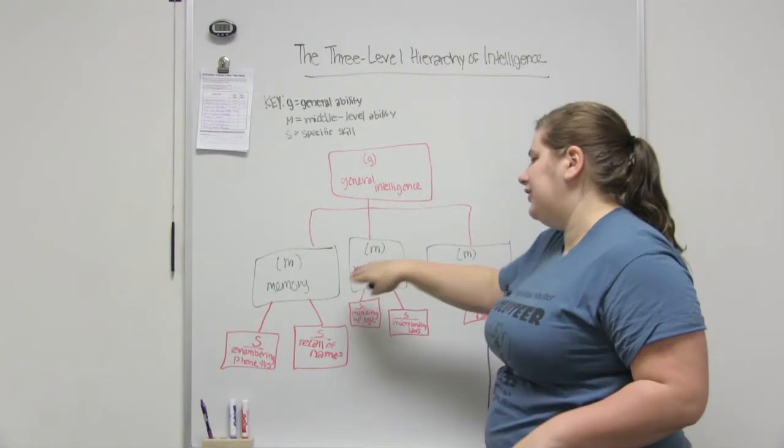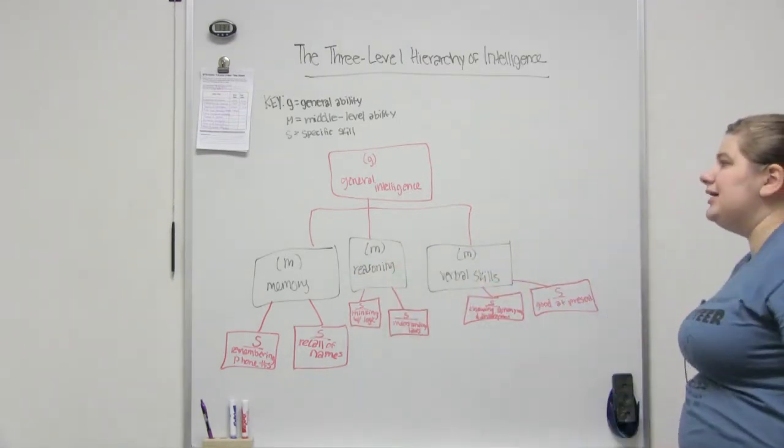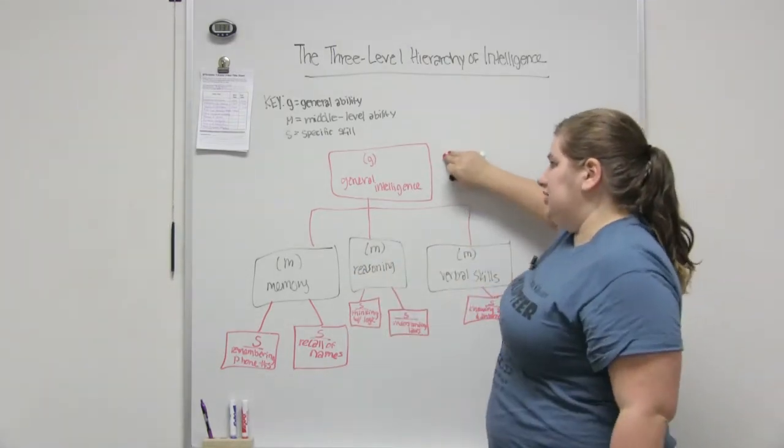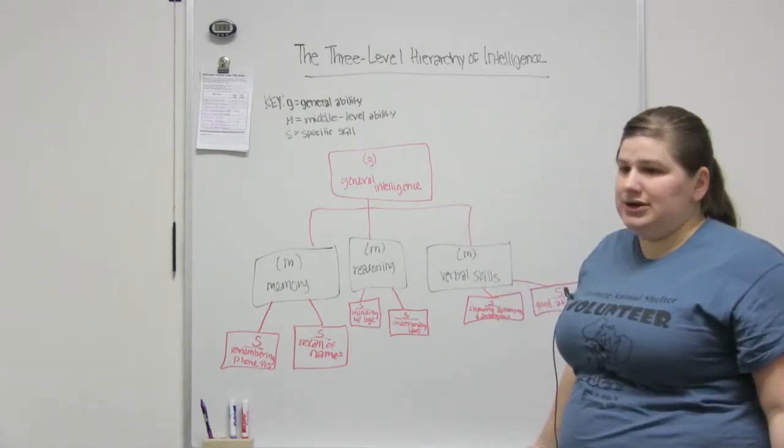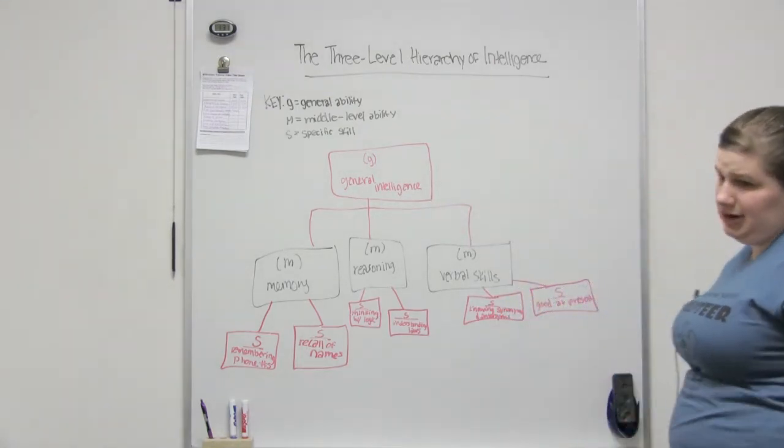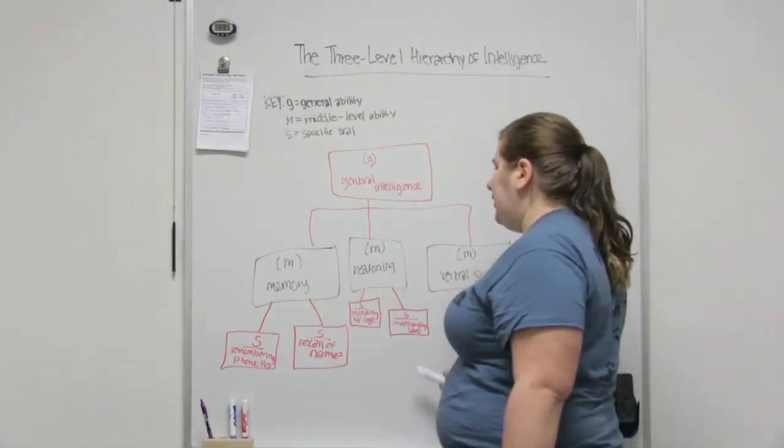So we break it down into g, which in this case is just going to stand for somebody's general intelligence—basic arithmetic, basic reading, basic writing, etc. And then we break it down into three middle level abilities, which are memory, reasoning, and verbal skills.